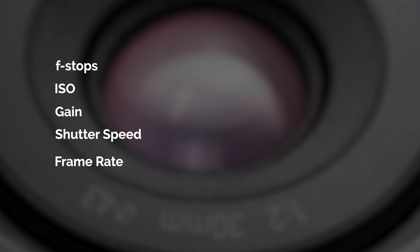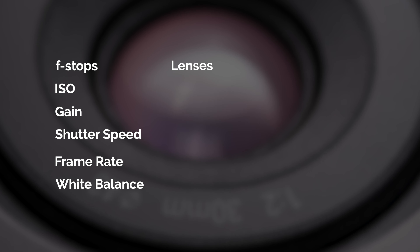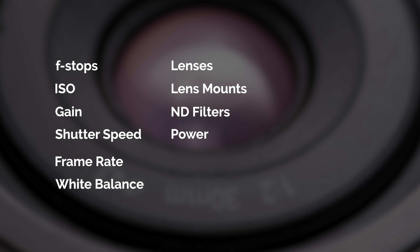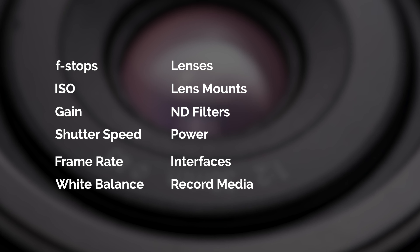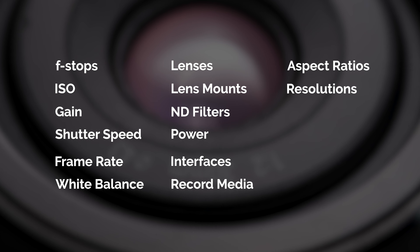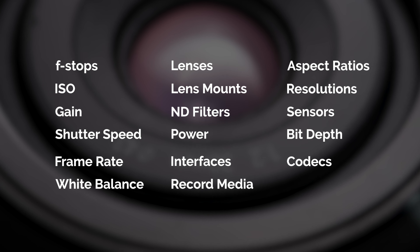Cameras — covering f-stops, ISO, gain, shutter speed, frame rate, white balance, lenses, lens mounts, ND filters, power, interfaces like outputs, record media, aspect ratios, resolutions, sensors, bit depth, codecs, and compression. Teleprompters — traditionally used for scripts but also can be used for live video, PowerPoint, and other playback elements. Graphics — like lower thirds, titles, and overlays to help tell your story. Video switchers — the tools used to intermix multiple cameras and sources to enhance your program.